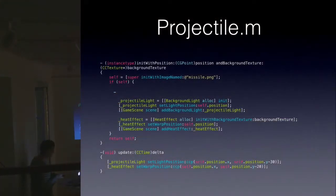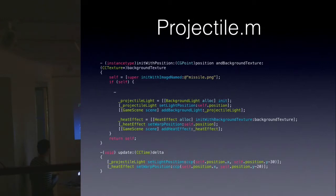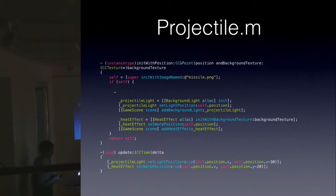Here's the new code for the projectile. The additions are where we add the projectile light and the heat effect. In the update method, all we do is set their coordinates to the same coordinates as the missile.